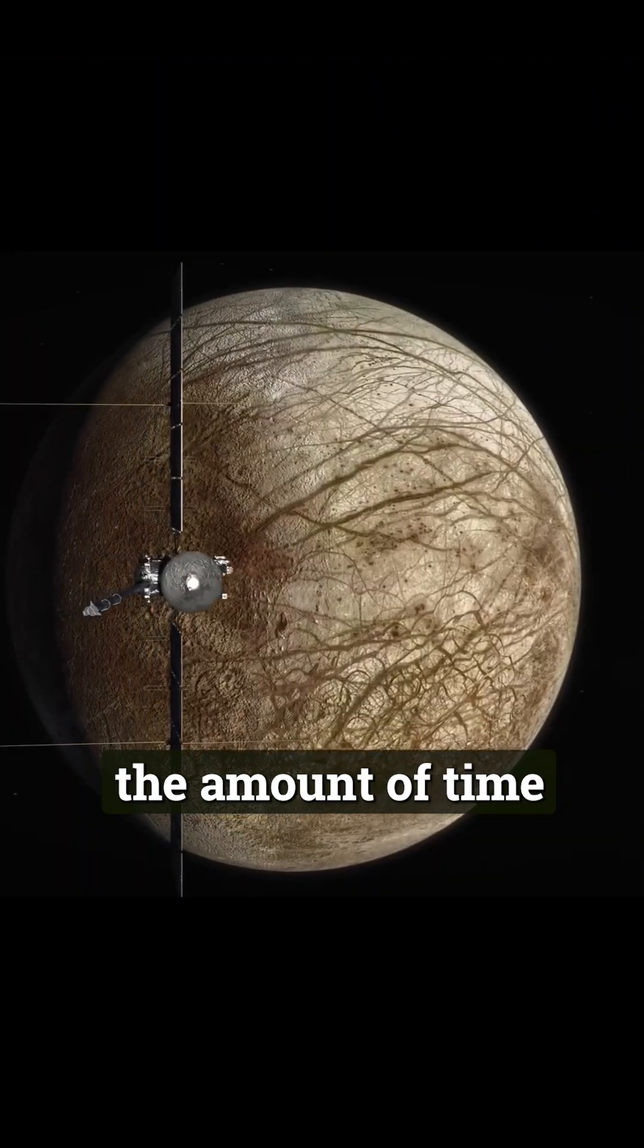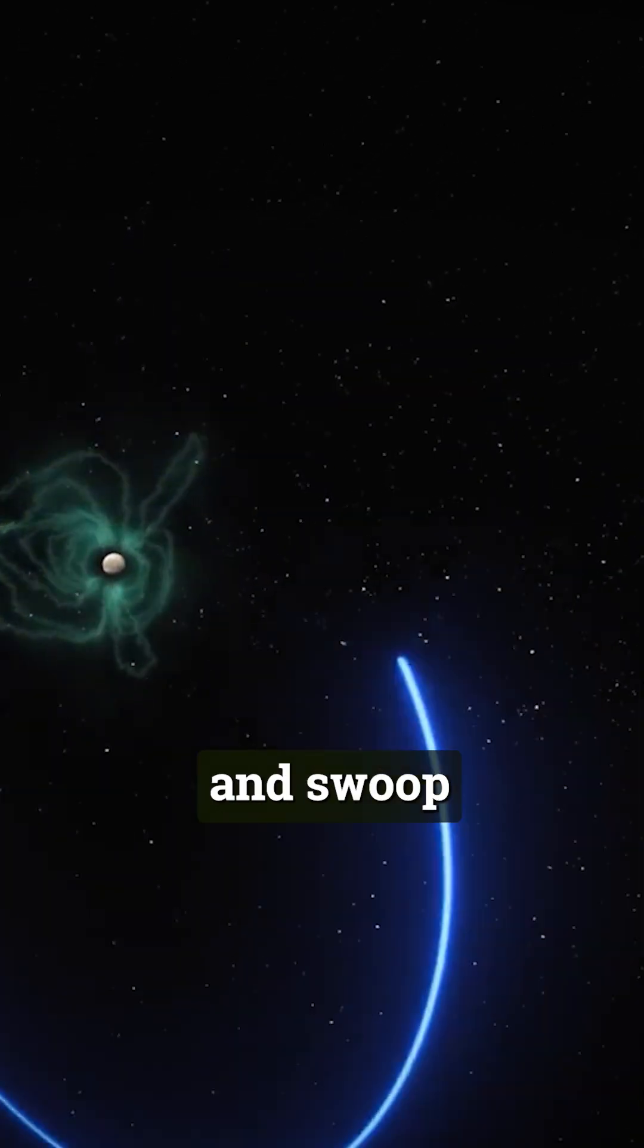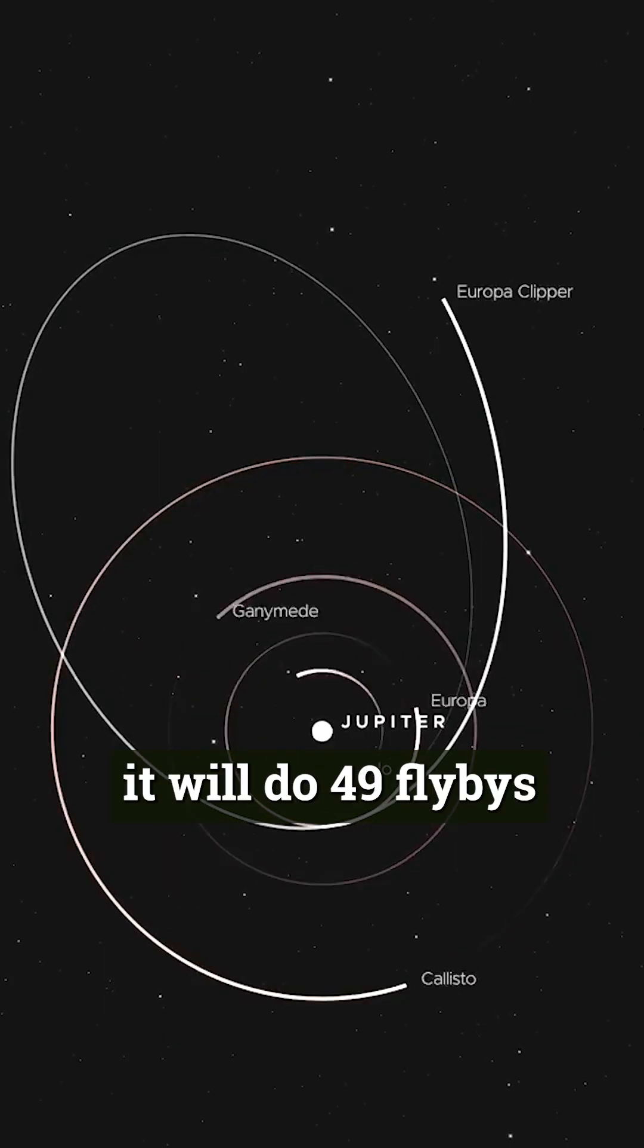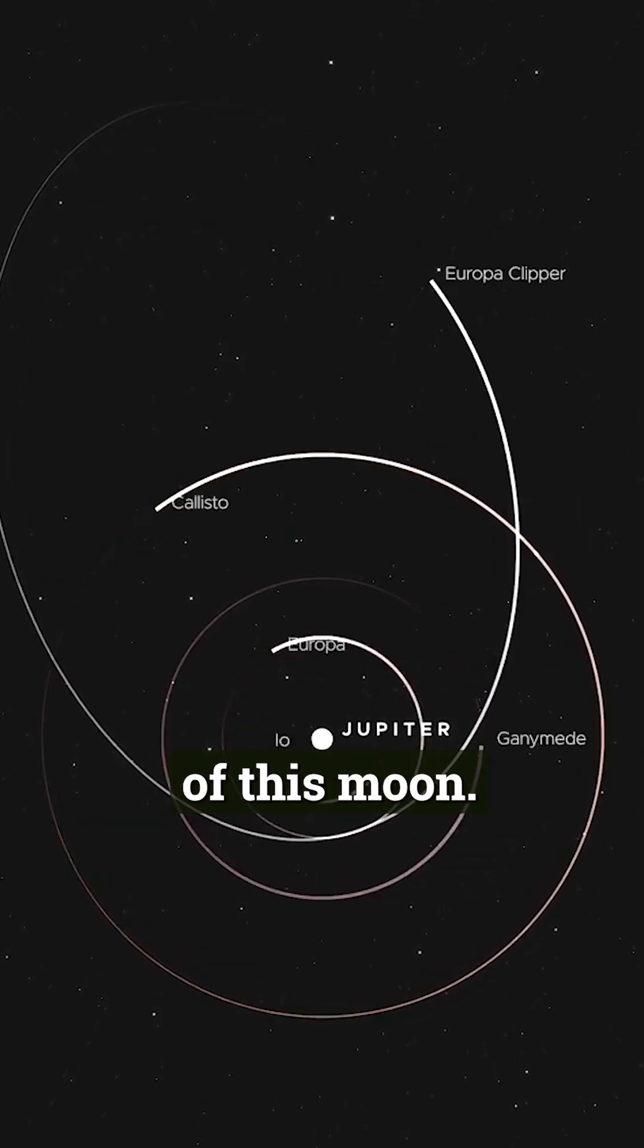To minimize the amount of time the spacecraft is in there, it will orbit Jupiter from afar and swoop in every few weeks to quickly fly by Europa and leave. Altogether, it will do 49 flybys to map the entire surface of this moon.